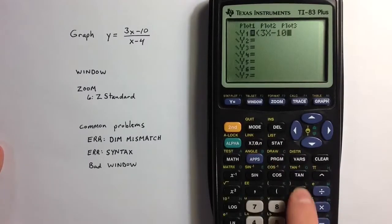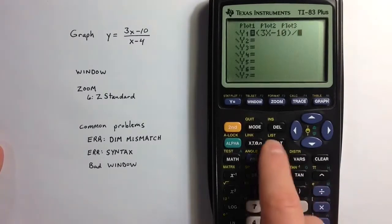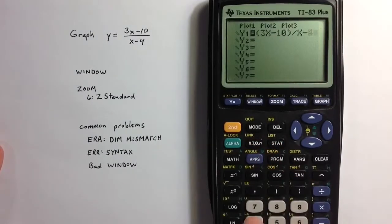3x minus 10, close the parentheses, divide it by x minus 4. However...